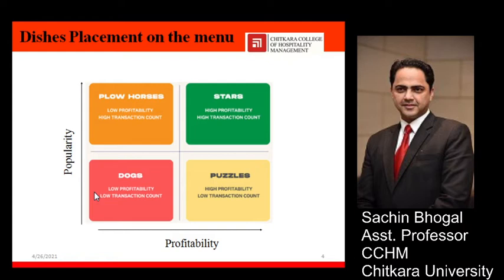You must have heard that there are four boxes on the basis of which the menu is classified, and we had already discussed them: stars, plow horses, puzzles, and dogs. Stars are items which are very popular and very profitable. Puzzles are very profitable but not very popular. Plow horses are very popular but not very profitable. Dogs are neither profitable nor popular.